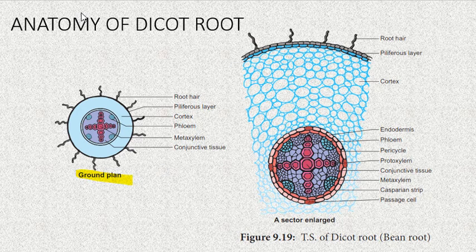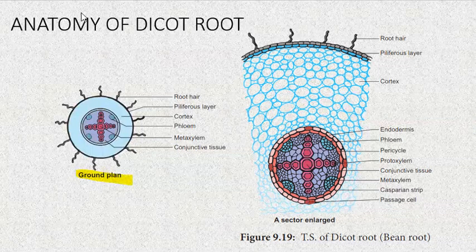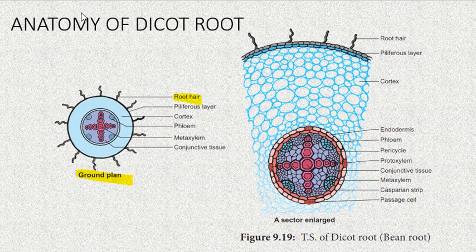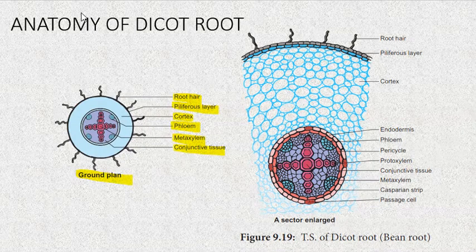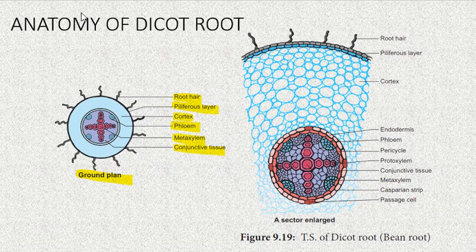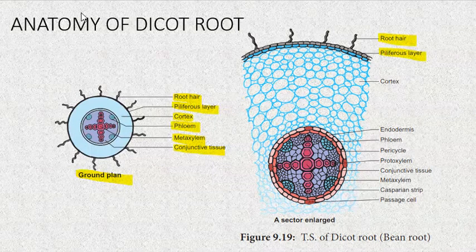What will be the sequence of various layers, various types of cell layers in an organ? We call them root hair, piliferous layer, cortex, phloem, metaxylem, and conjunctive tissue. When I draw a cellular diagram, I will find all these layers one by one: root hair followed by the piliferous layer, then cortex, endodermis, pericycle, phloem.